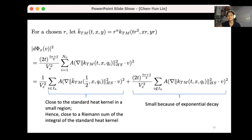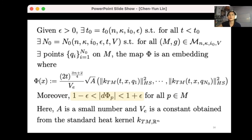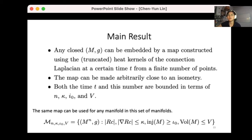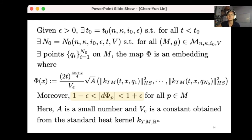That's how we can see the dφ being bounded by 1 minus ε and 1 plus ε for any x. So let's look at the result again. So we're using the heat kernel to construct coordinates. q₁ gives you the first coordinate, q₂ gives you the second coordinate, and so on. So you have a map constructed using the heat kernels of the connection Laplacian. And the time t and the number of points are bounded by the geometric quantities n, κ, injectivity radius lower bound, and the volume. And the map can be made arbitrarily close to an isometry. The dφ is bounded by 1 minus ε and 1 plus ε.